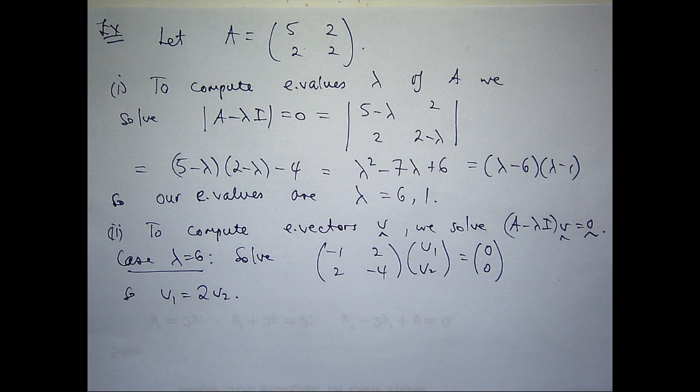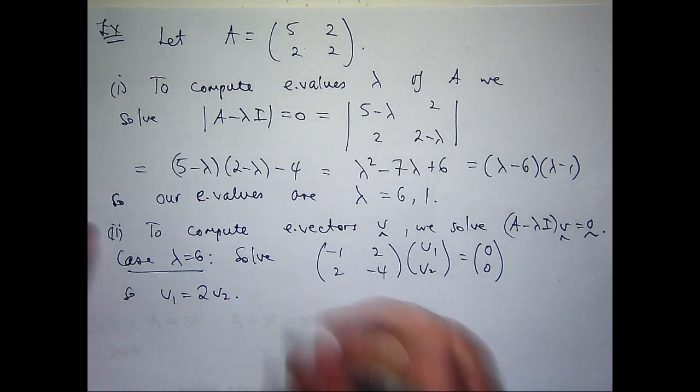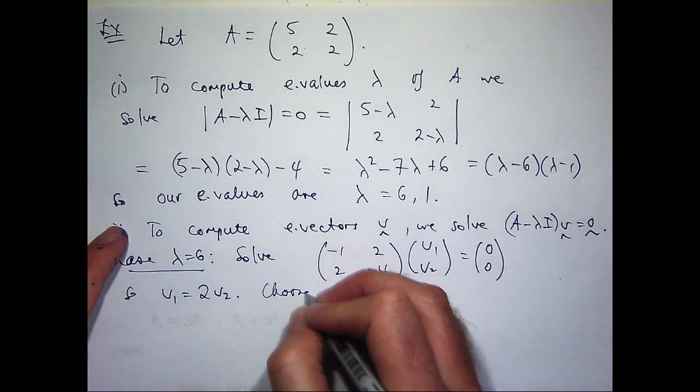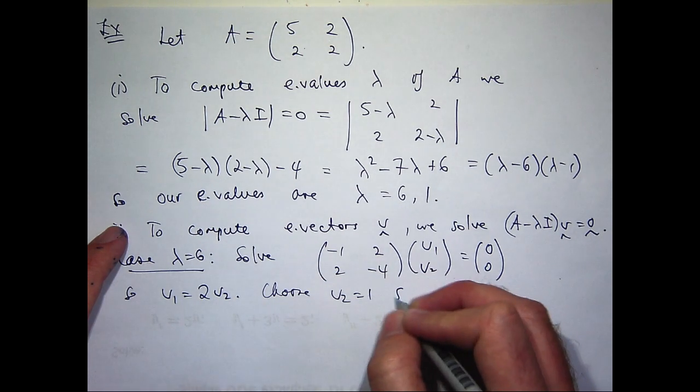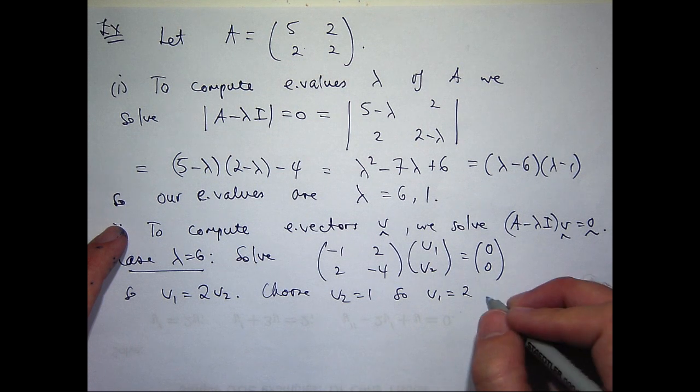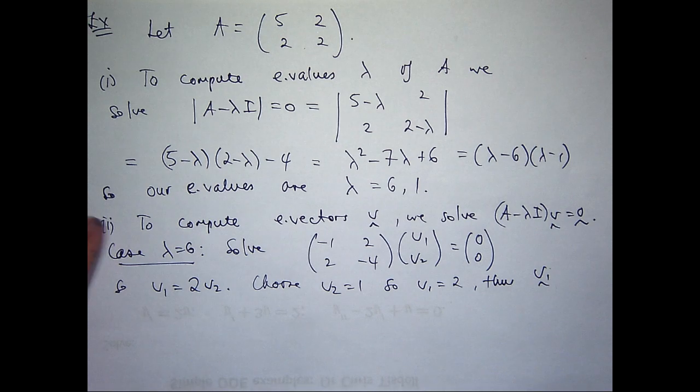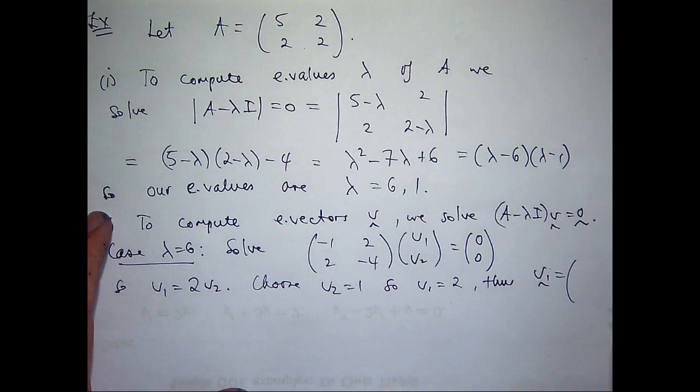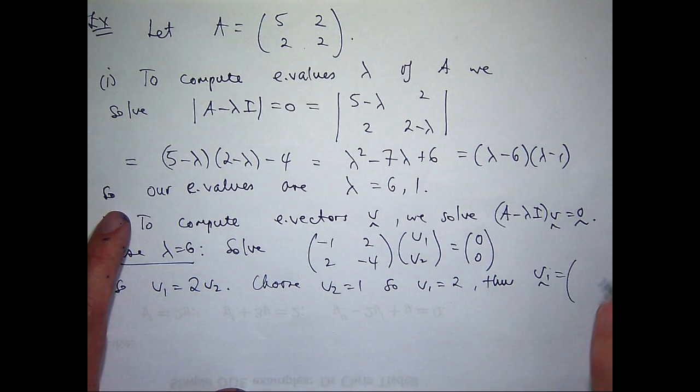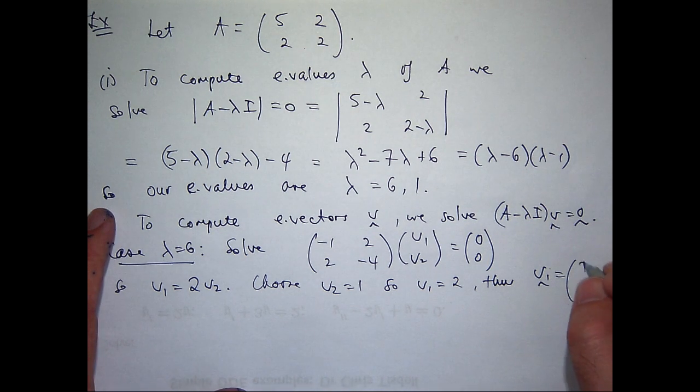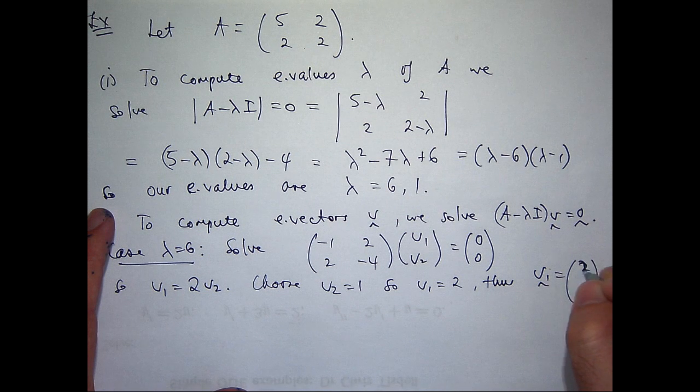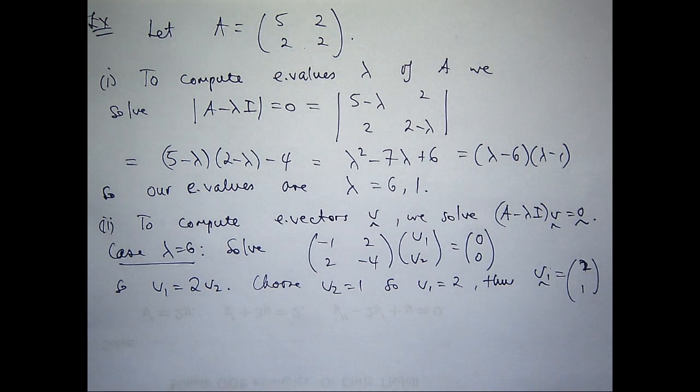So what I can do is just choose v1 or v2 and then I can get the other one. So I'm going to choose v2 to be 1, so v1 will be 2. So our eigenvector, which I'm going to just write as this vector v1, will be 2, 1.